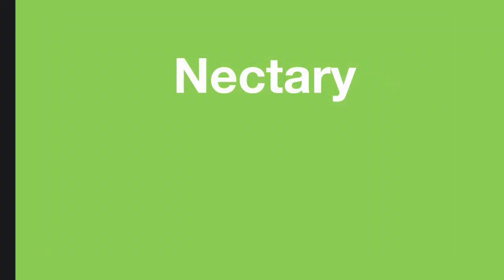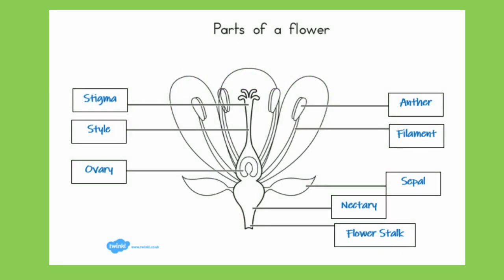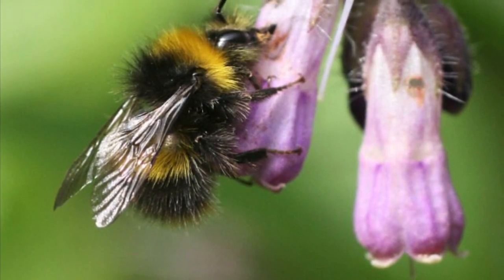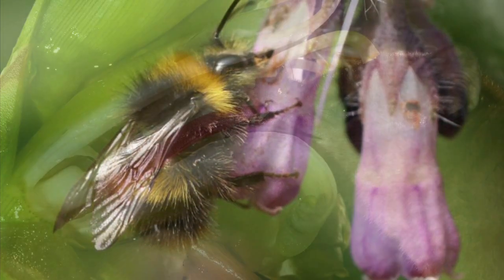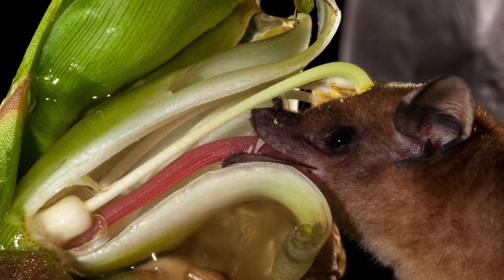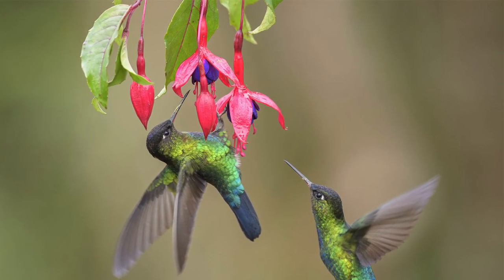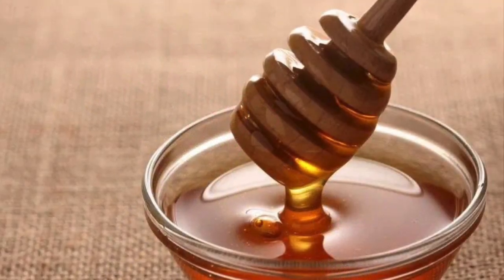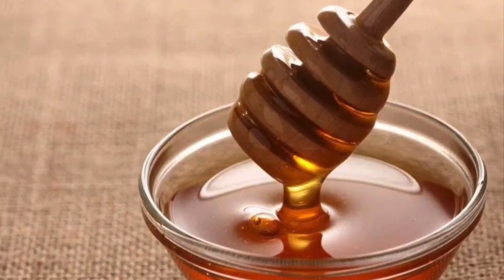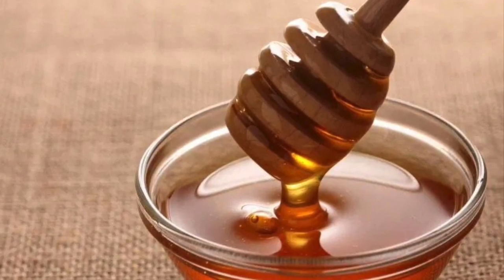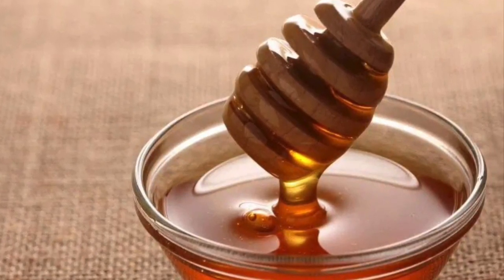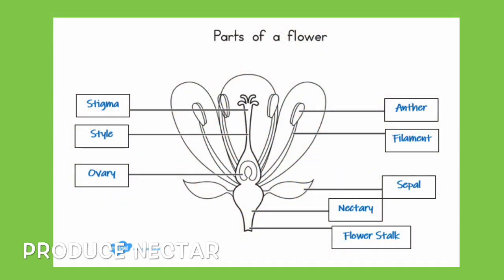The next part of the flower we're going to look at is the nectary, labelled on the bottom right hand side of this diagram. The reason all pollinators — bees, some mammals and birds — go to flowers is not to get the pollen, it's actually to get the nectar. Nectar is a really sugary fluid, a bit like honey, and that's what bees make their honey from. The nectary's whole job is to produce nectar.